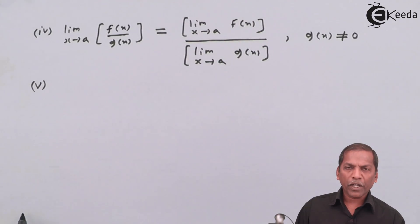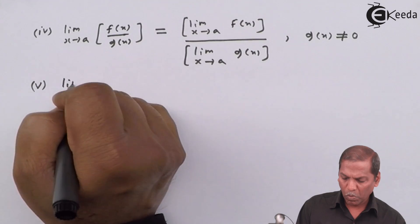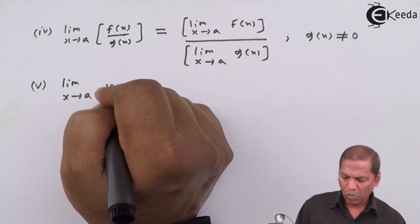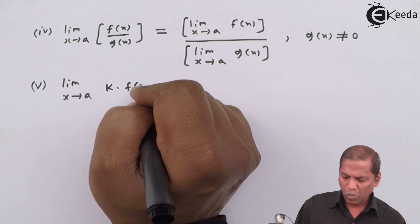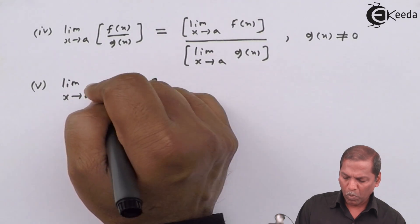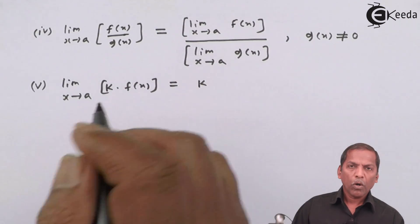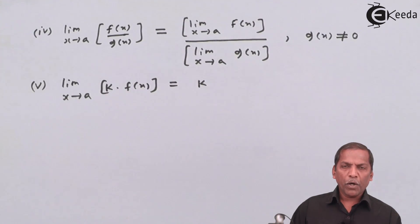Number 5: limit x tends to a k into f of x is equal to k into limit x tends to a f of x, where k represents a constant term.